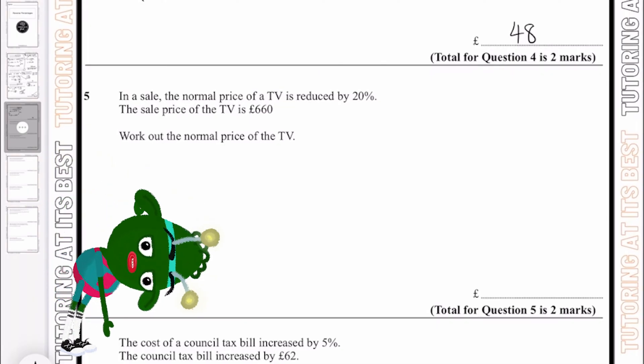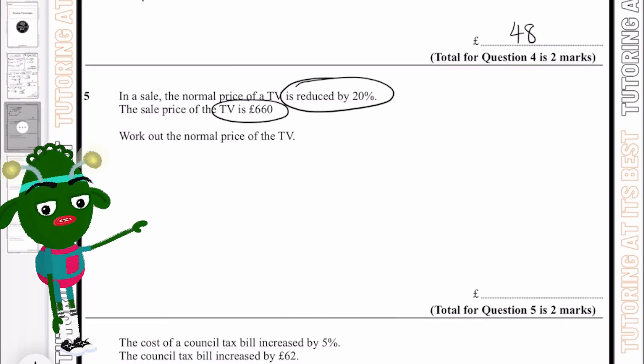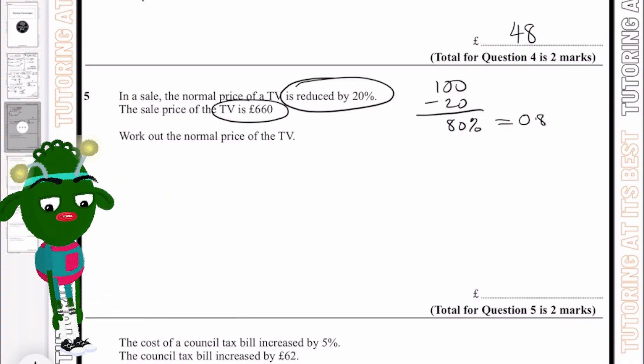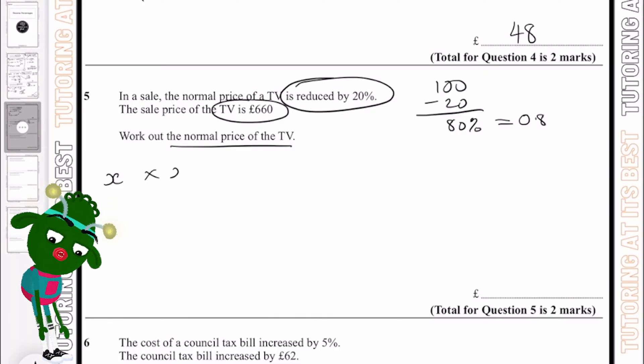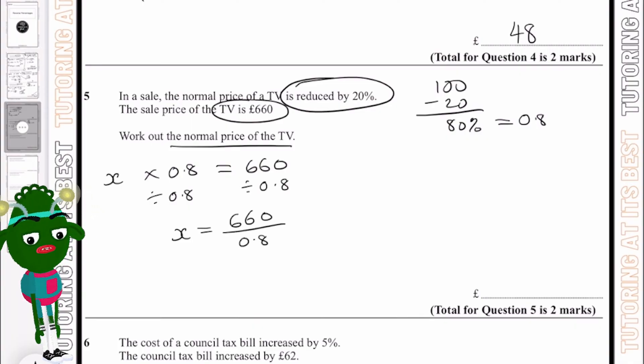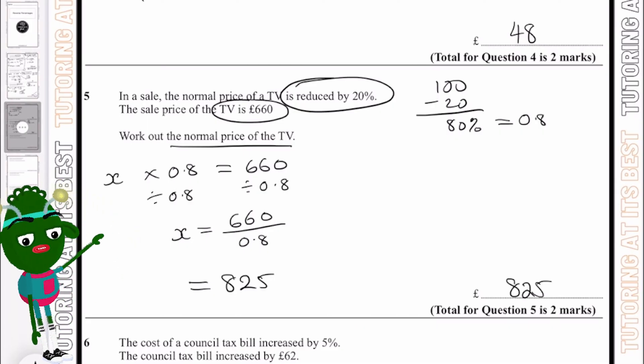Question 5. In a sale, the normal price of a TV is reduced by 20%, and the sale price is now £660. We'll follow the same process. 100 take away 20 gives us 80%, which equals 0.8 as a decimal. Because they want us to work out normal price, let's put that as x, where we will then multiply this with our percentage and we will get 660. We will then divide both sides by 0.8, so we will get x equals 660 divided by 0.8, and that will give us £825. So £825 was the price of the TV before the sale.